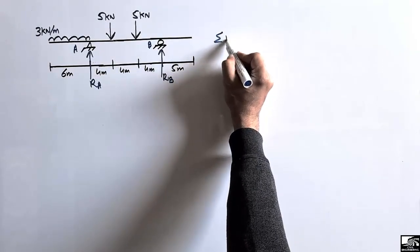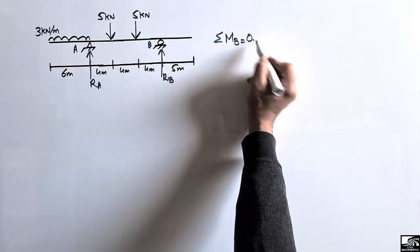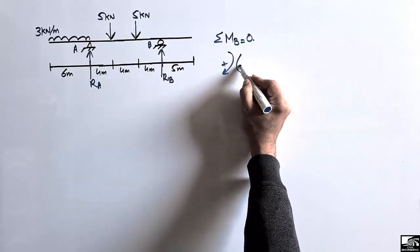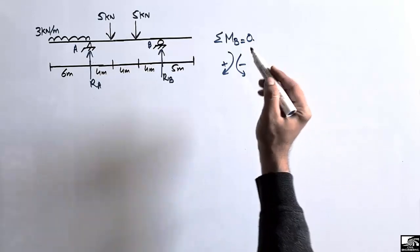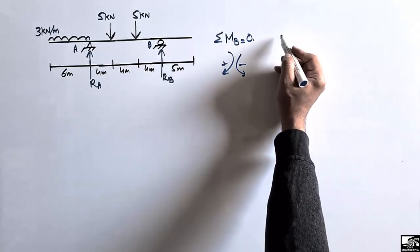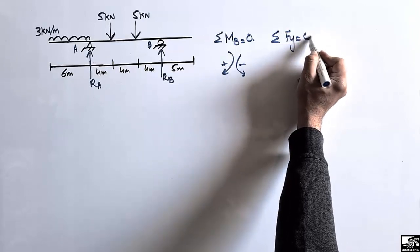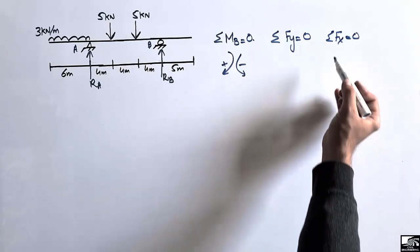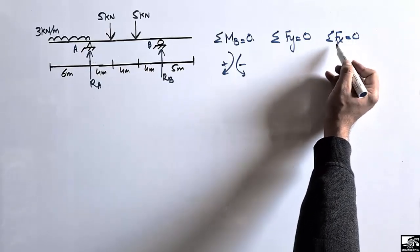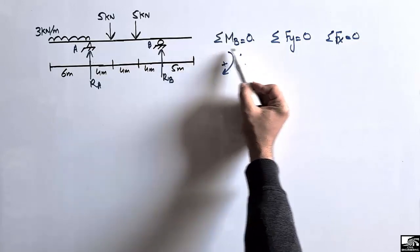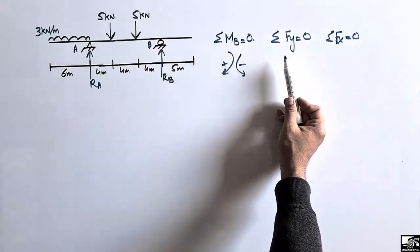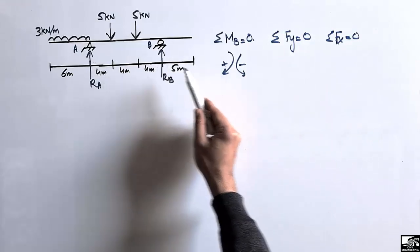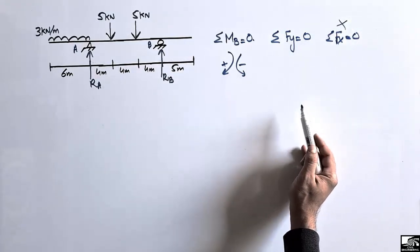To find out these support reactions, let's take the summation of moments at point B equal to zero, where clockwise moment is taken as positive and anti-clockwise moment is taken as negative. We can also use the three equilibrium equations: summation of Y equals zero, summation of F_X equals zero, and summation of moments equals zero. However, since there are no horizontal forces, we cannot use the horizontal equation.